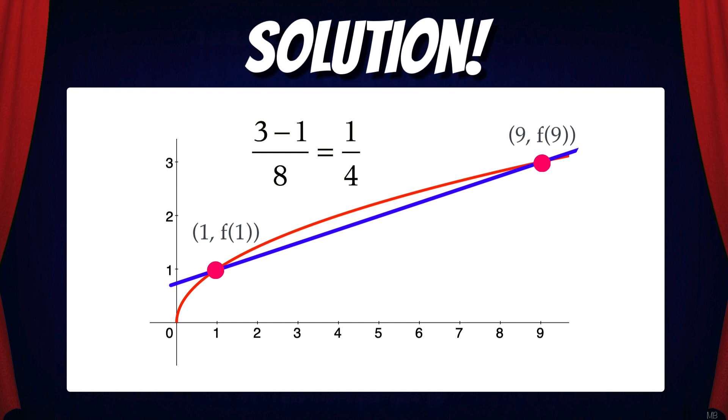Simplifying, we get (3 - 1) / 8 which equals 1/4. In other words, the average rate of change over the interval [1, 9] is 1/4.